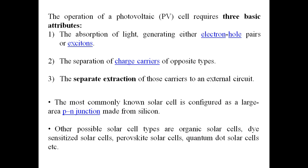The operation of a basic photovoltaic cell can be described in three simple steps. The first is absorption of light energy — absorption of photons — which results in the generation of electron-hole pairs, also called excitons. The second step is the separation of charge carriers of opposite types. The third step is the separate extraction of those carriers to an external circuit.